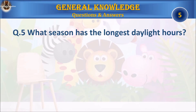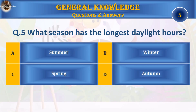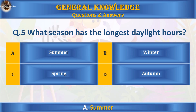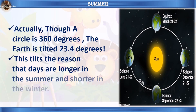Question 5. What season has the longest daylight hours? A. Summer, B. Winter, C. Spring, or D. Autumn? Your time starts. The answer is A. Summer. Let's learn some facts about summer. Though a circle is 360 degrees, the Earth is tilted 23.4 degrees. This tilt is the reason that days are longer in summer and shorter in winter.